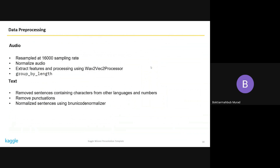For audio preprocessing, we resampled the audio at a 16,000 Hz sampling rate, normalized the audios, extracted features using the Wav2Vec2 processor, and grouped samples by length to speed up training. For text preprocessing, we removed sentences containing characters from other languages such as English, removed numbers, removed translations, and normalized sentences using a Unicode normalizer.